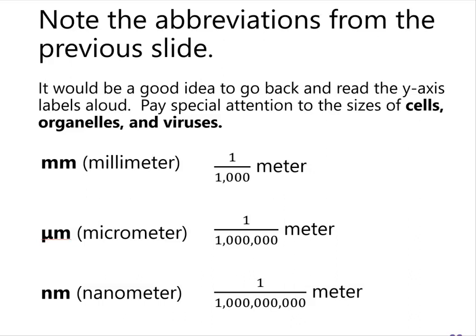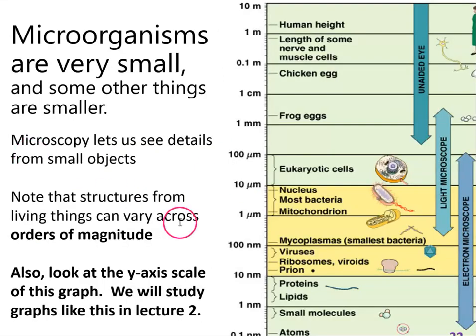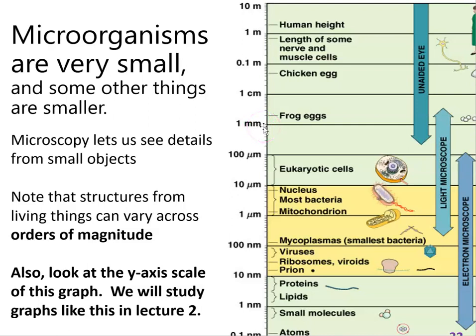I want you to learn these units. I want you to learn what a millimeter is and how you write it — this is exactly how you write it: lowercase m, lowercase m. For millimeter, that's one one-thousandth of a meter. Around a millimeter is about the size of a frog egg. You can see something a millimeter across easily.